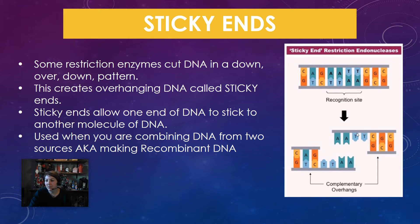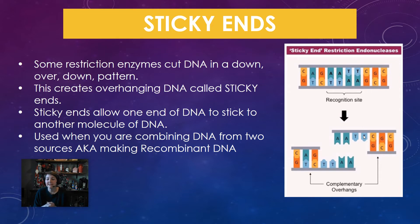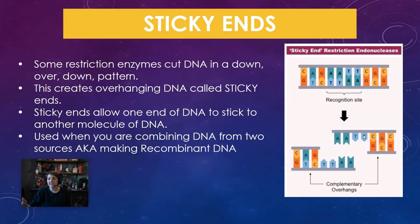This overhanging DNA — A, A, T, T — if it finds a sequence that says T, T, A, A, it will combine and bind and stick to that. That's why we call these sticky ends. So again, that's when the enzyme cuts down, over, and down.